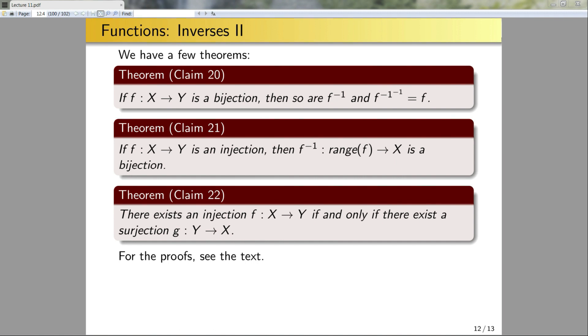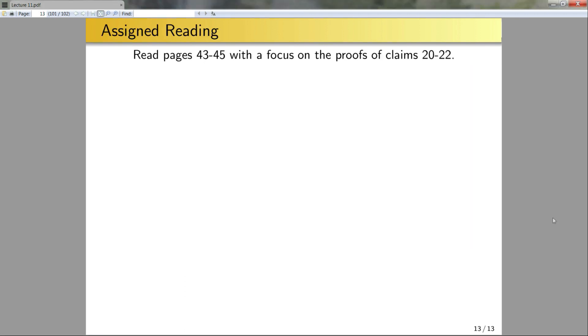So we now have functions, injections, surjections, bijections, and inverses. Next we'll talk about composition of functions and ask questions about composing injective, surjective, and bijective functions — before getting into cardinality and the concept of infinity. Read pages 43 through 45, focusing on the proofs of claims 20 through 22. Understand what the proofs are saying and why, and feel free to ask questions in office hours or on Piazza.